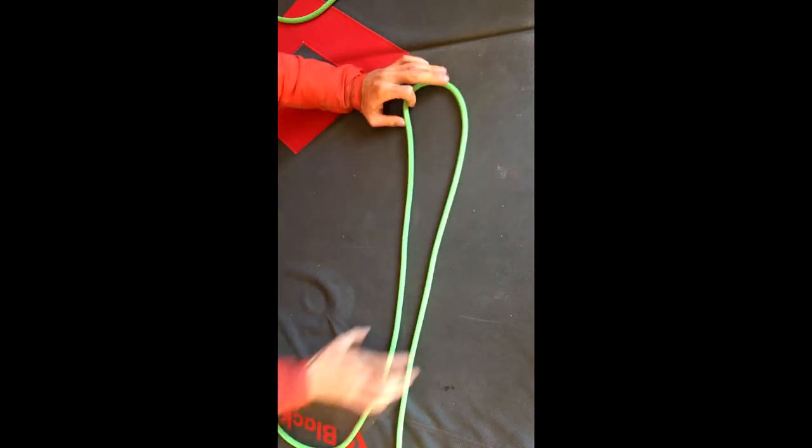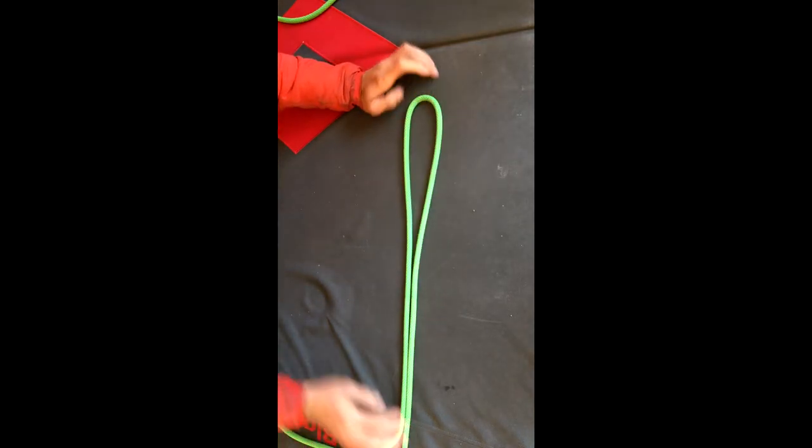Hi, Alex here from Stone Adventures. In this video we're going to look at two different ways to tie the alpine butterfly. The alpine butterfly is a handy knot to know if you ever need to tie into the middle of the rope, as it can be loaded in three different directions. For the first method, we're going to start by putting a bight in our rope, just like this.